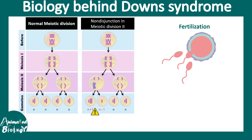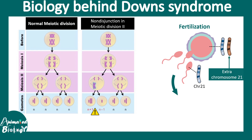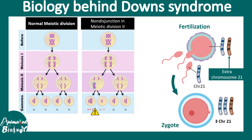Imagine a fertilization event where the sperm has one set of chromosome 21, and the ovum is also expected to have one chromosome 21 — that gives two sets of chromosome 21, which is normal. But due to non-disjunction, if the ovum has one extra copy of chromosome 21, then after combining the sperm and ovum there would be three copies total — trisomy 21 — and this leads to Down syndrome.